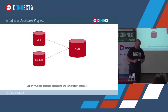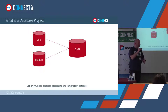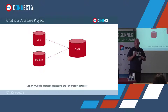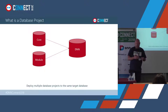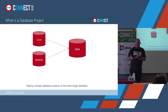The other interesting thing about database projects is that you can have multiple database projects deployed to the same database. So it's not a one-to-one relationship between a database and a database project. You could start in a simple way — DNN core has one large database project, and then a module developer creates his own database project for his own module. Both would then be deployed to the same database.